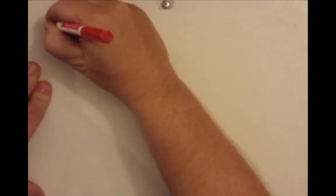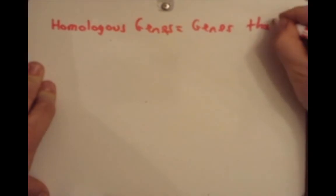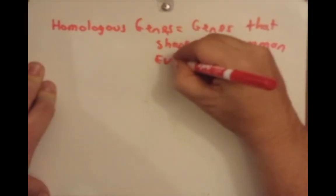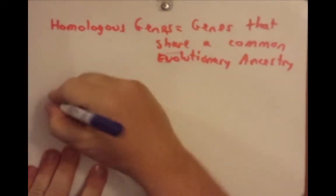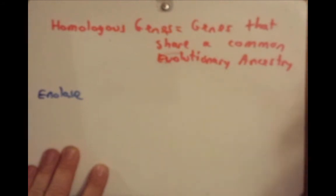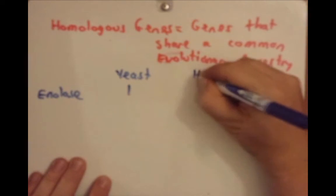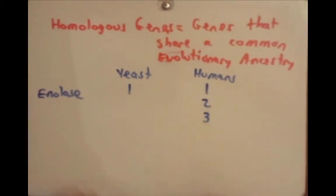Up to this point we've talked about characteristics and traits we can observe in different species and how we build phylogenetic trees based on that. We also know that organisms change at the genomic level, and we can follow that as well. To discuss that, I'll use the term homologous genes — genes that share a common evolutionary ancestry. For example, the gene enolase, which codes for the enzyme enolase, exists as one gene in yeast. In humans, there is the same enolase gene plus two other enolase genes — three total.